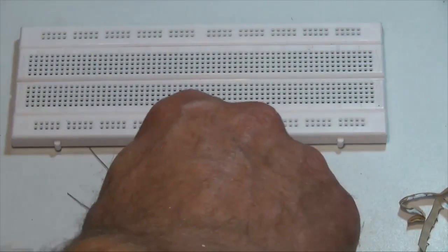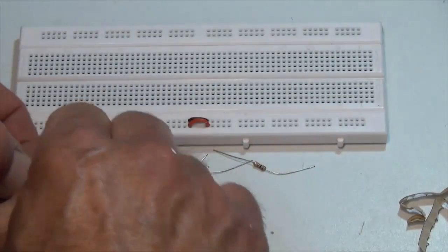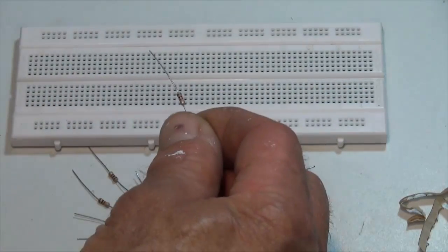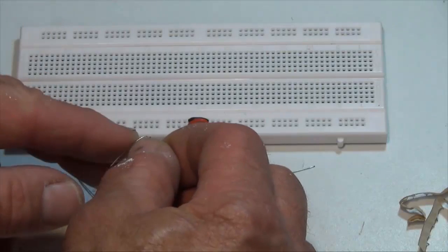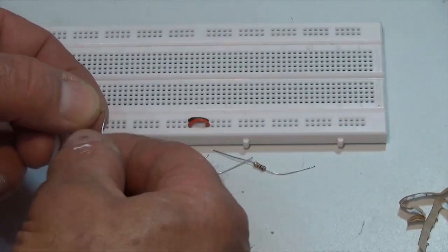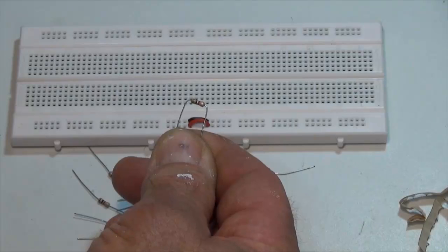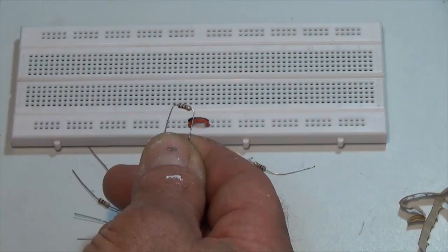When I want to connect the resistors into the project board, I'll grab my resistor and I'll just bend the leads into a U-shape. Just like that. Not anything special, I don't even need to use any tools to do it.